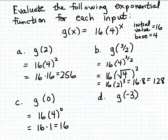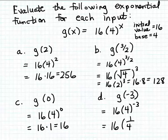Finally, let's use a negative input, so let's try evaluating g of minus 3. This is going to be 16 times 4 to the minus 3 power. Now we've got to recall how to deal with negative exponents. 4 to the minus 3 power, we can simplify that as 1 over 4 cubed. You just invert the base and change the sign of the exponent to positive.